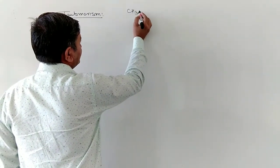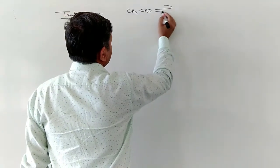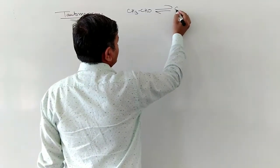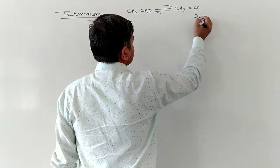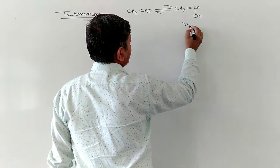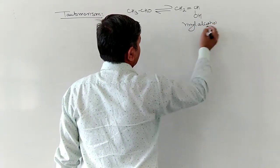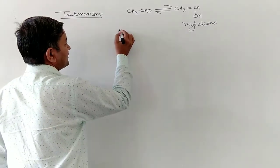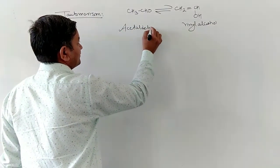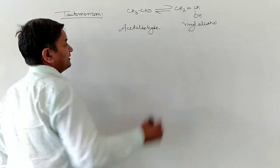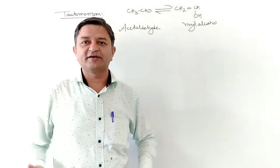Now we have a stereo line example. We have CH3-CH=O which is in equilibrium with CH2=CH-OH. This is a dynamic equilibrium, and due to this we get keto-enol tautomerism.